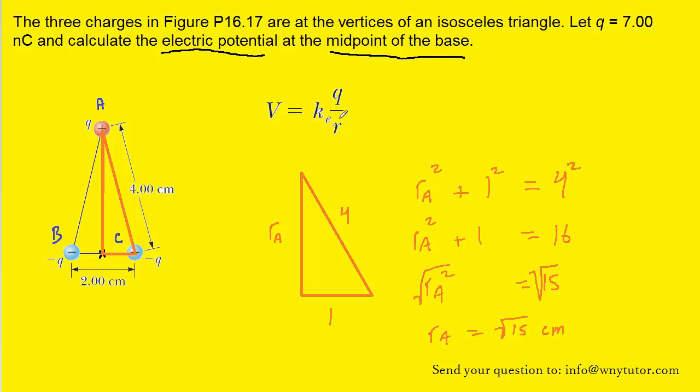Note that when we plug into this formula, the R actually needs to be in meters. That's an important conversion that we need to make. So with the centimeters, what we can do is simply multiply by 10 to the minus 2. And that's going to change the centimeters into meters. So we'll have to do that for each distance.